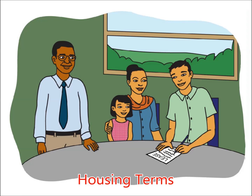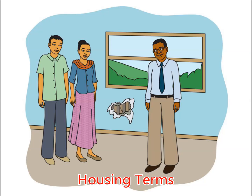A lease is a legal document between a tenant and a landlord. When the tenant signs a lease, he or she agrees to pay a monthly rent and live in the apartment for a certain period of time. A security deposit is money the tenant pays the landlord. This money covers damages that may occur while the tenant is renting, or covers any unpaid rent the tenant owes the landlord.